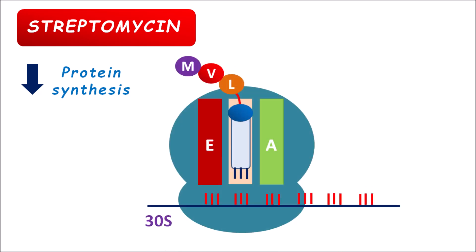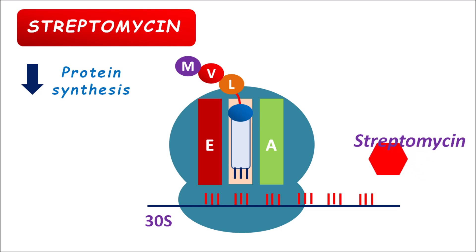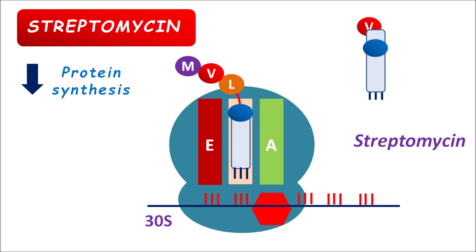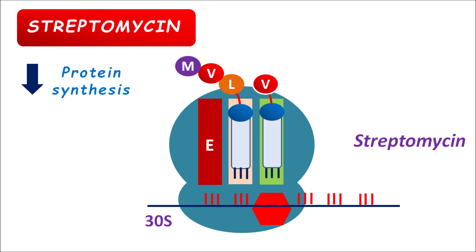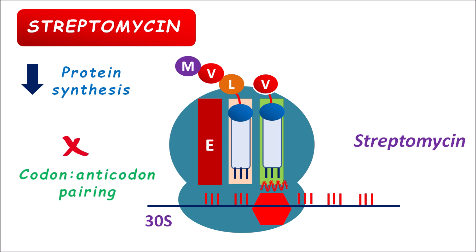The second drug, streptomycin, inhibits protein synthesis within the bacteria. On the bacterial ribosome, streptomycin binds to the 30S subunit. Once bound, it impairs the recognition of codon and anticodon. Normally tRNA brings an amino acid that binds to the A site of the 50S subunit, but streptomycin blocks this recognition and inhibits codon-anticodon pairing, resulting in inhibition of protein synthesis.